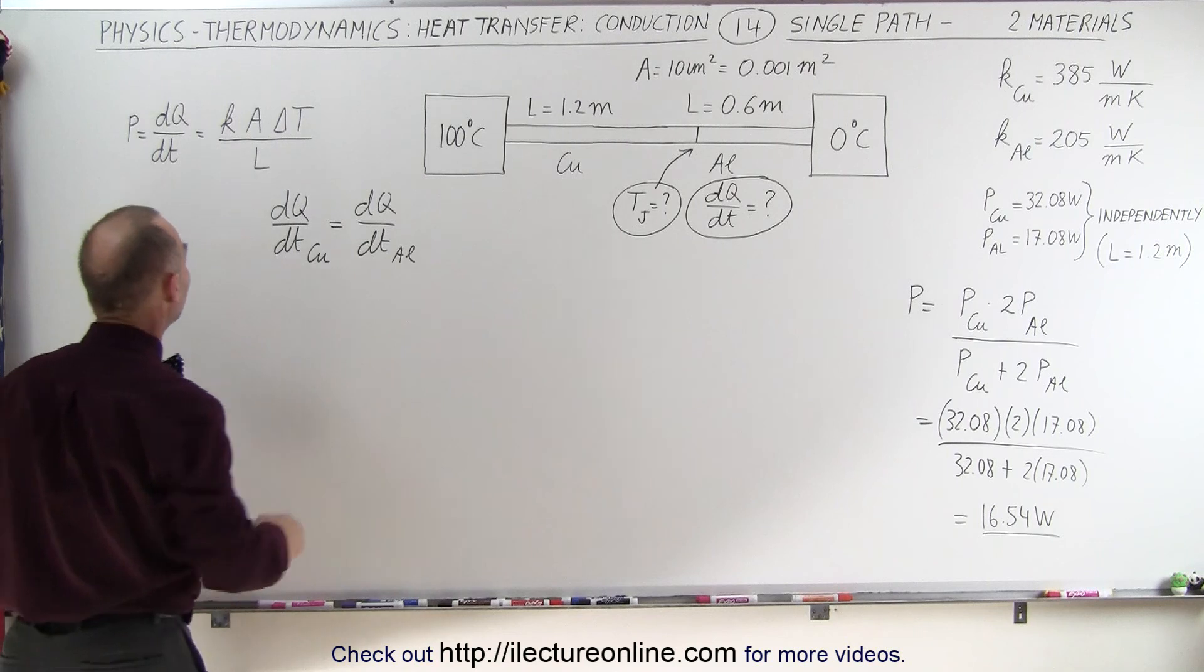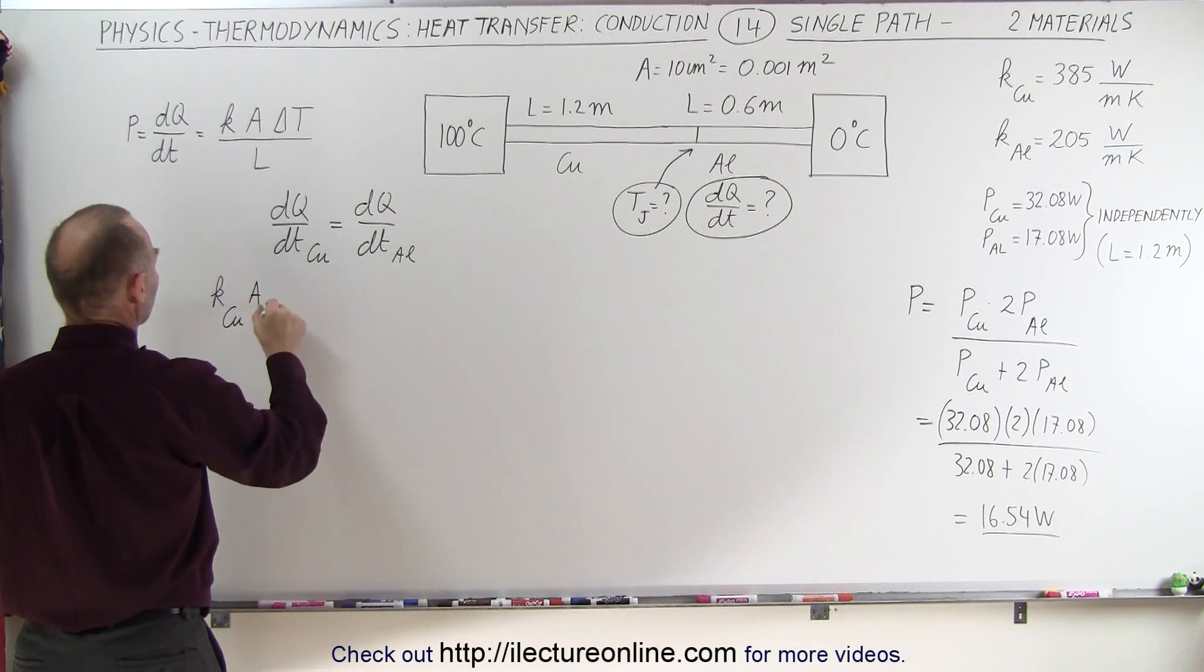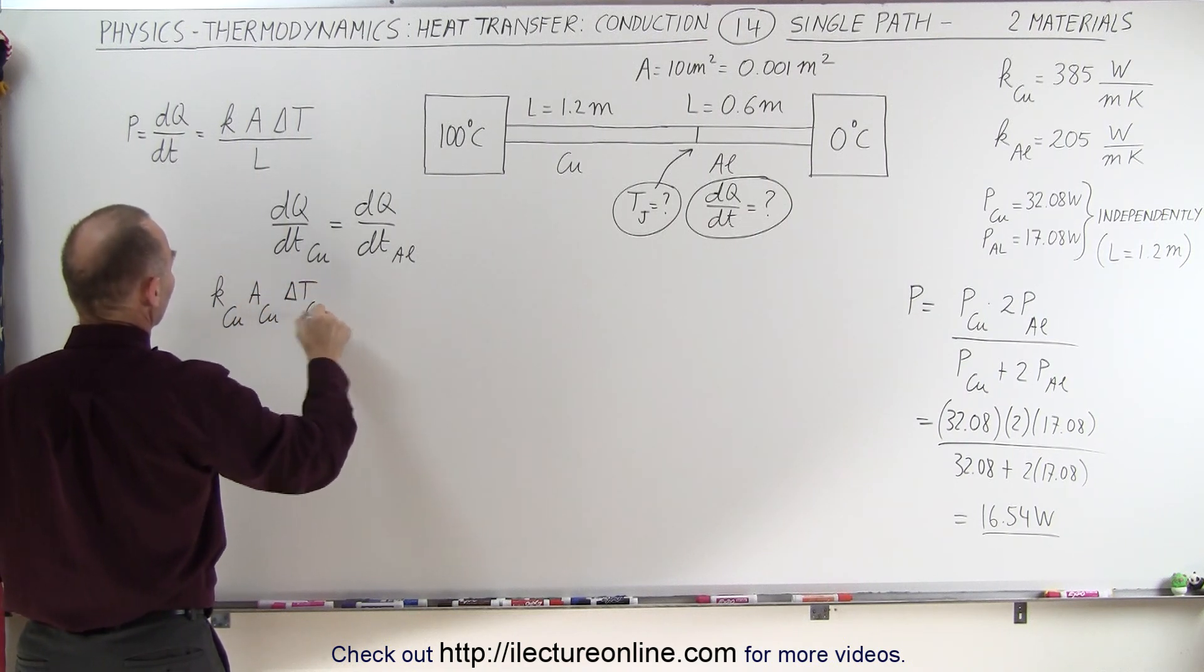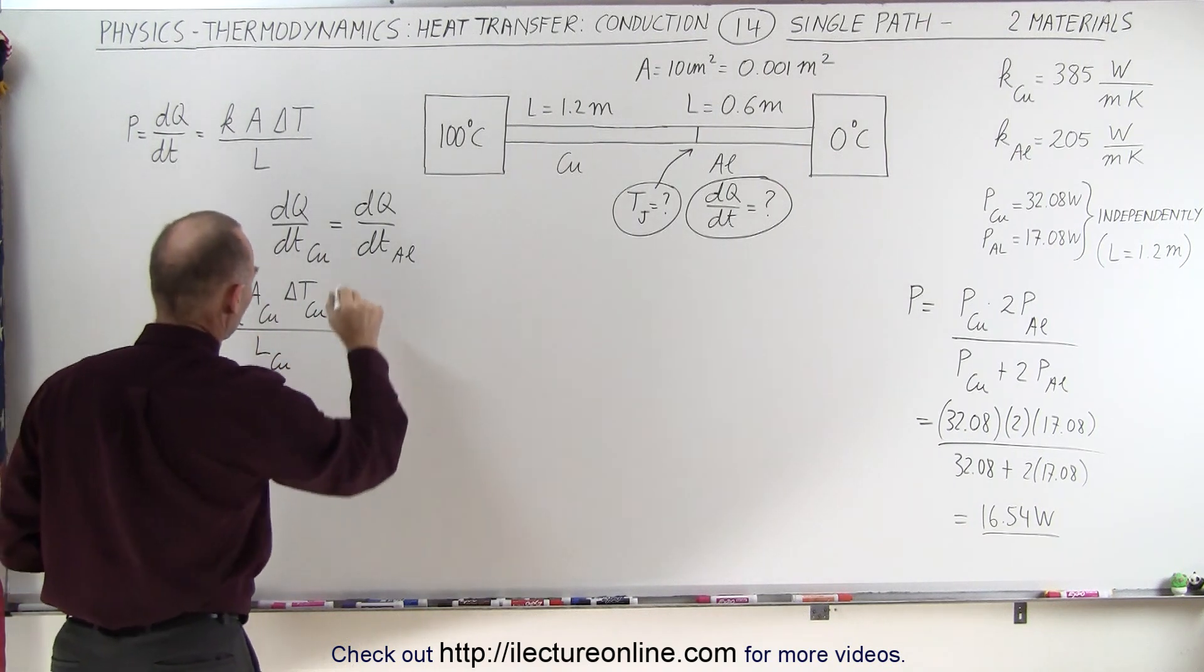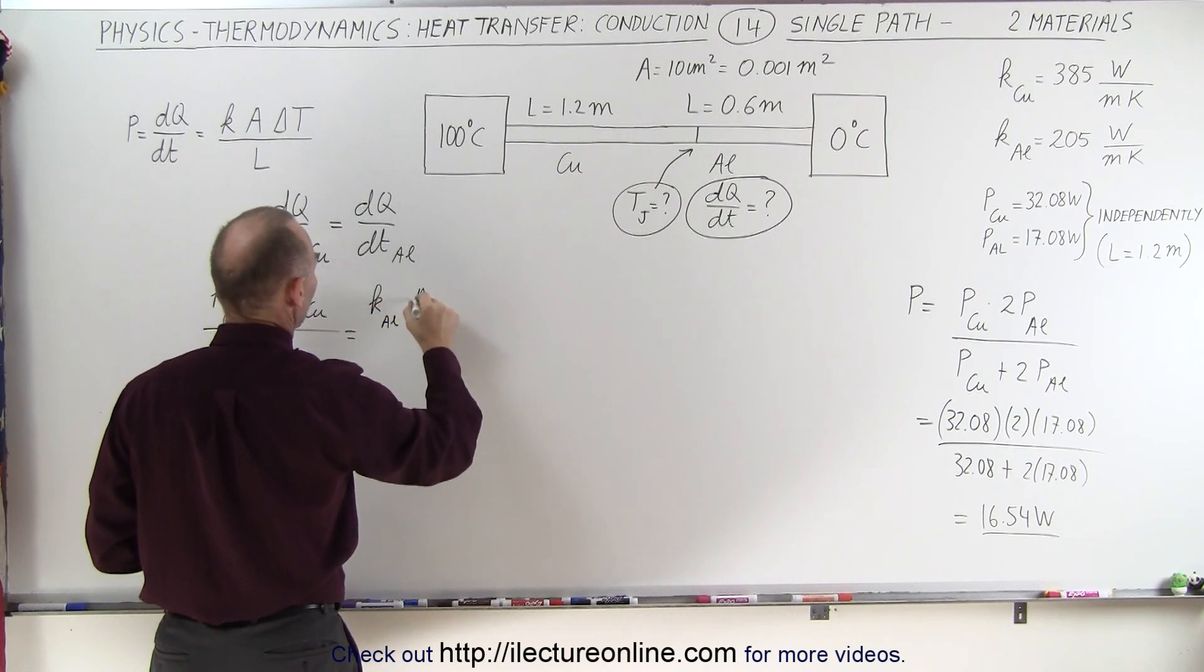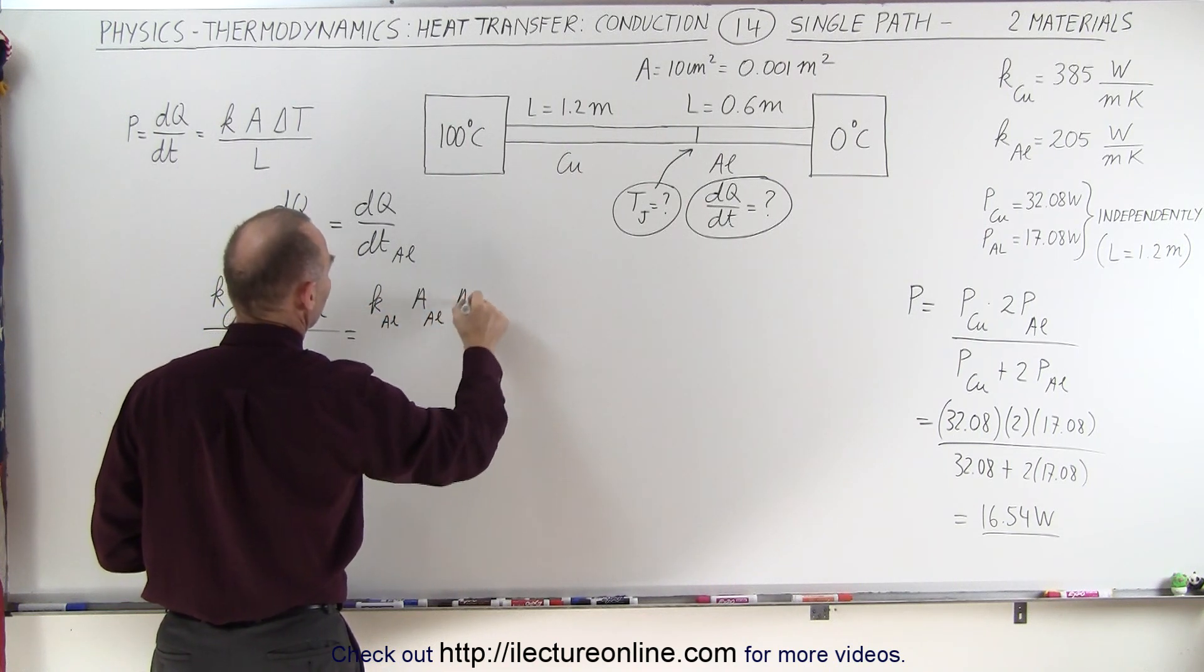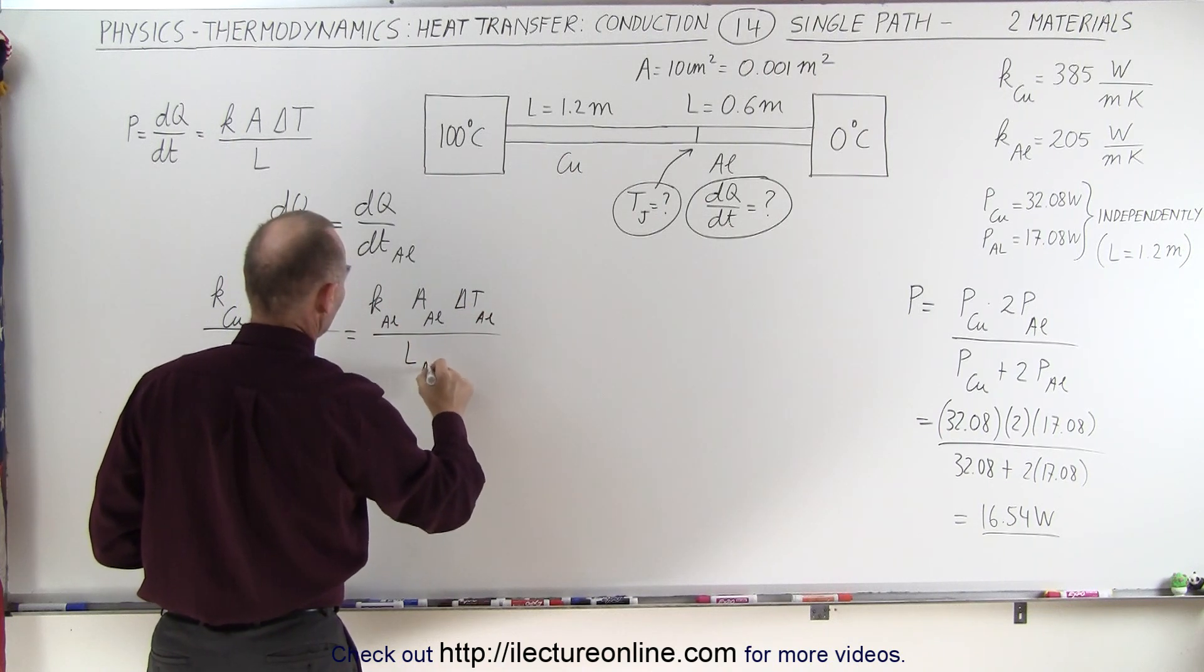And when we plug in the values, we get the conductivity constant of copper times the cross-sectional area of copper times the difference in the temperature in the copper section divided by the length of the copper section equals, on the other side, K of aluminum, cross-sectional area of aluminum, delta T of aluminum, and the length of the aluminum section.